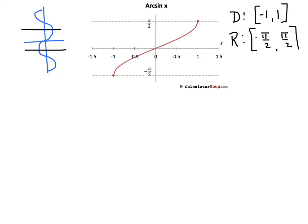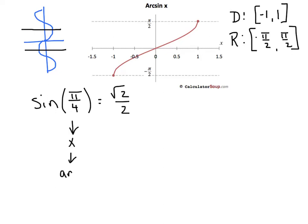Before we evaluate a couple of these values, I want to go over some terminology. Back in the day, if I asked you for the sine of π/4, you would have told me it was √2/2. When π/4 is your x value, it represents an angle. And the √2/2 is your y value — I refer to that as the value. So we've got our angles and our values, and it's very important to keep those straight.